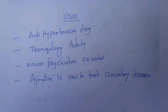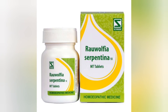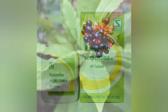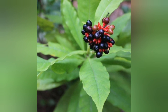It is used as an antihypertensive, but in high doses it shows mental depression. Deserpidine is also used as an antihypertensive but shows low side effects. Ajmaline is used in the treatment of circulatory diseases. This is regarding Rauvolfia.